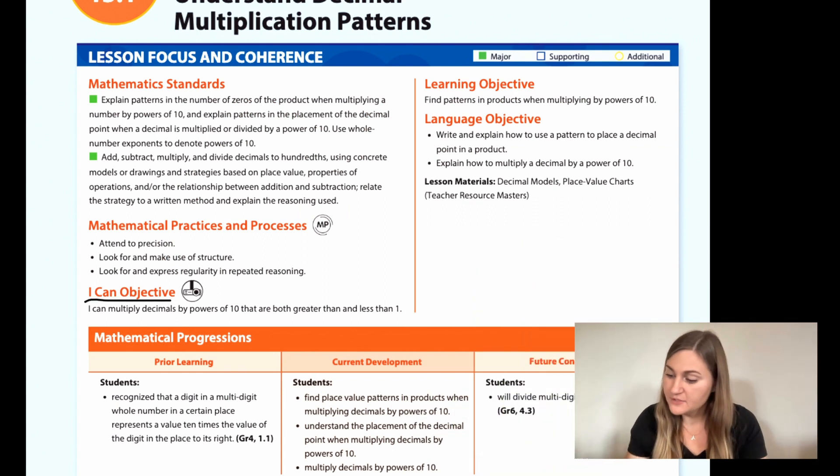I'm going to start by going over the I can objective. It says I can multiply decimals by powers of 10 that are both greater than and less than 1. The learning objective is to find patterns and products when multiplying by powers of 10. The prior learning is that students recognize that a digit in a multi-digit whole number in a certain place represents a value 10 times the value of the digit in the place to its right.